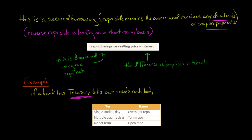If the term of the arrangement is just for a single trading day, that's called an overnight repo. If it's going to be multiple trading days — three, four, five, or whatever — then it is called a term repo.